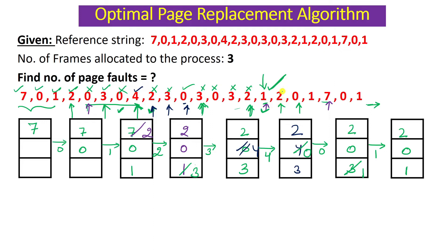Page 2 comes next — it will not generate a page fault because two is already here. Page 0 is already here — no page fault. Page 1 is also already here — no page fault.